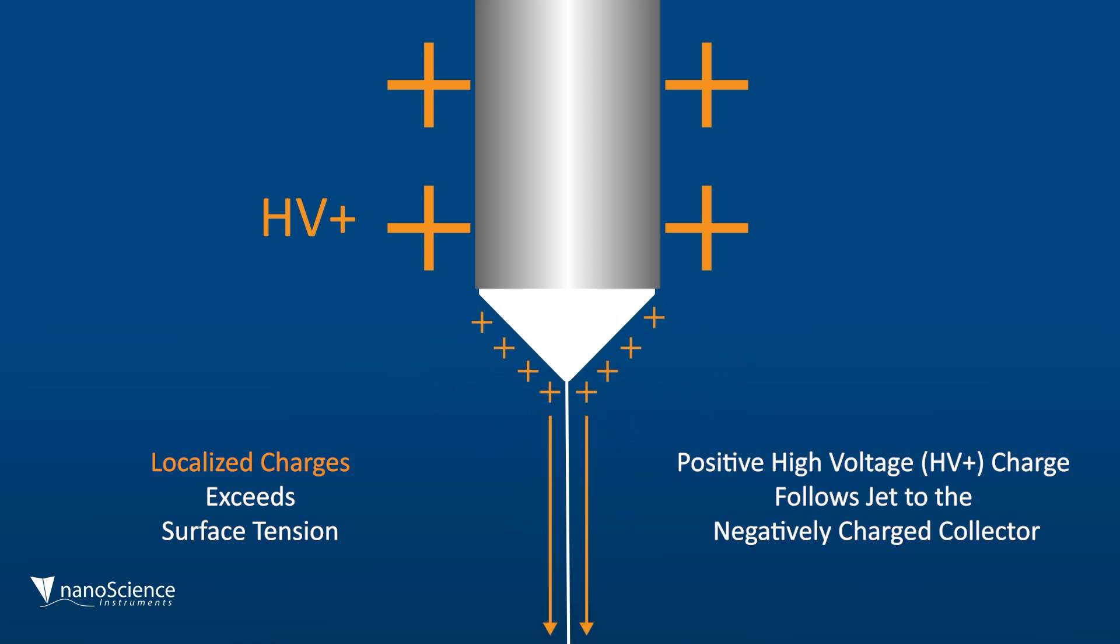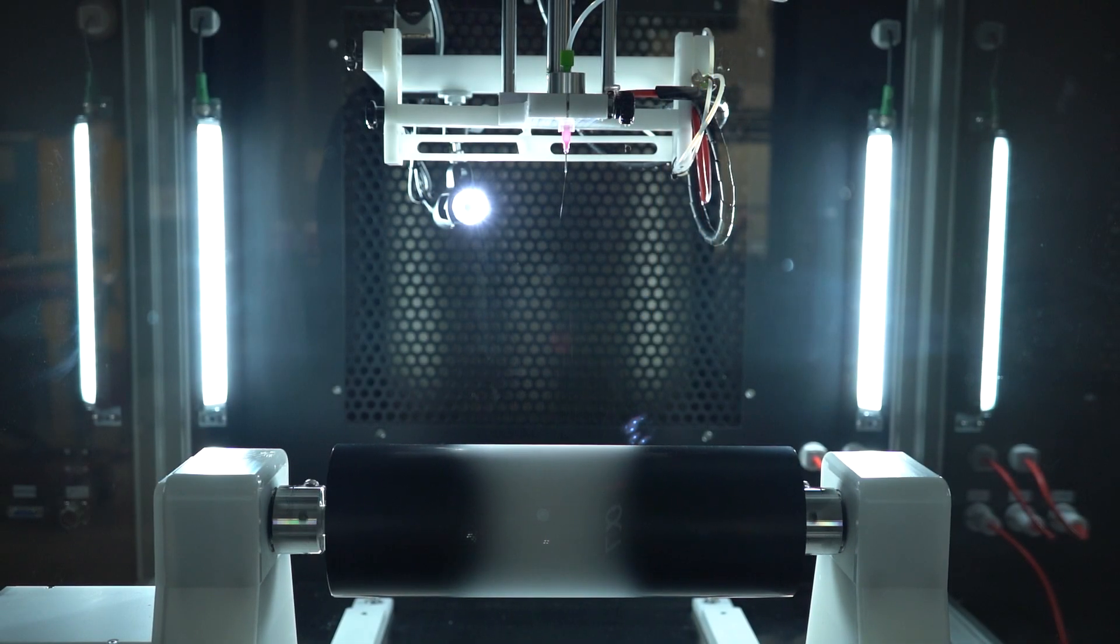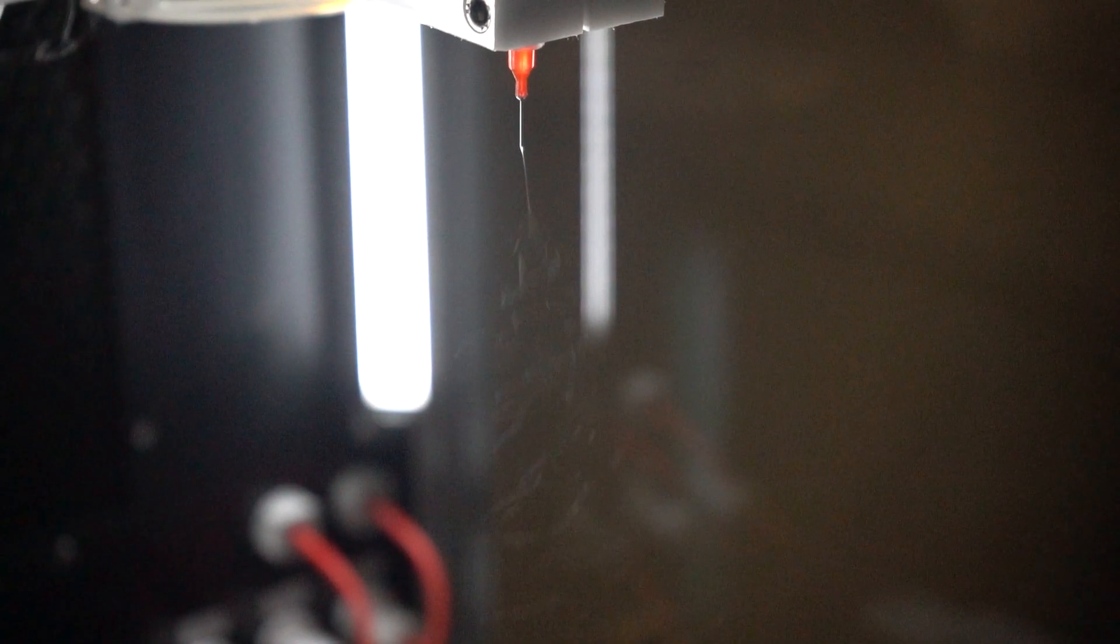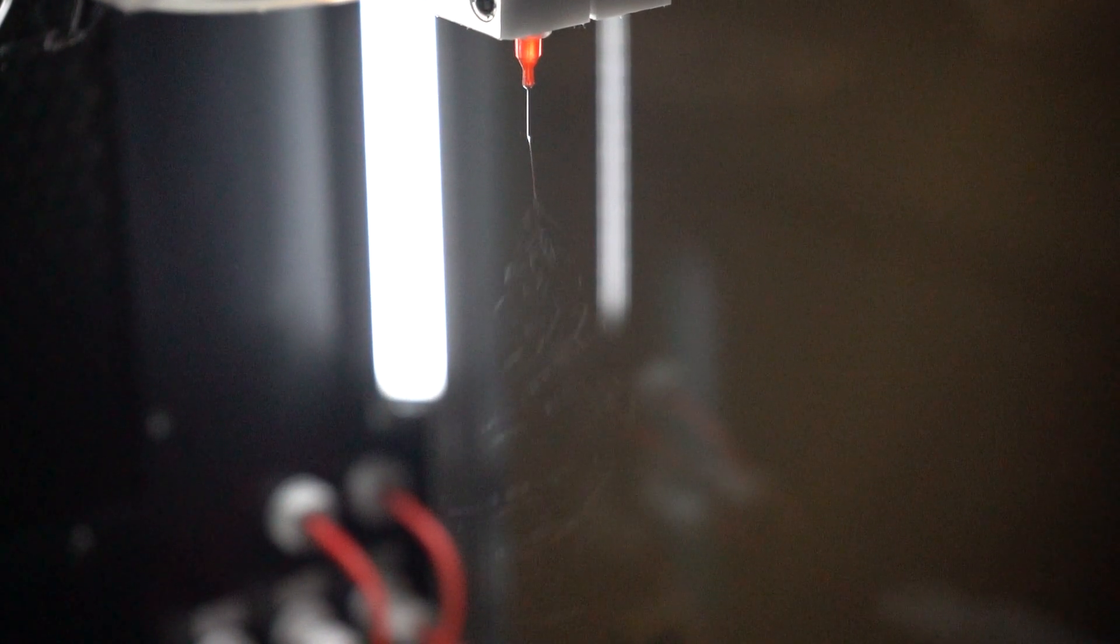So why is the Taylor cone crucial in electrospinning? Let's break it down. First, there's fiber formation. The formation of the Taylor cone is where the electrospinning process begins. From the cone's tip, a jet of polymer solution is ejected, and as it whips and dries, it turns into a solid nanofiber.